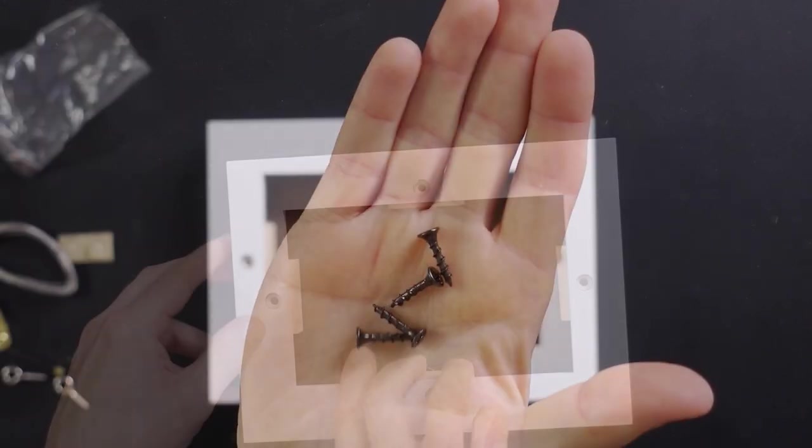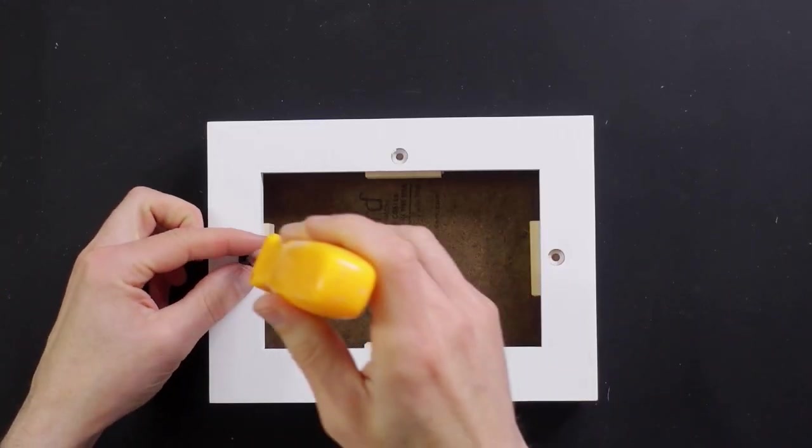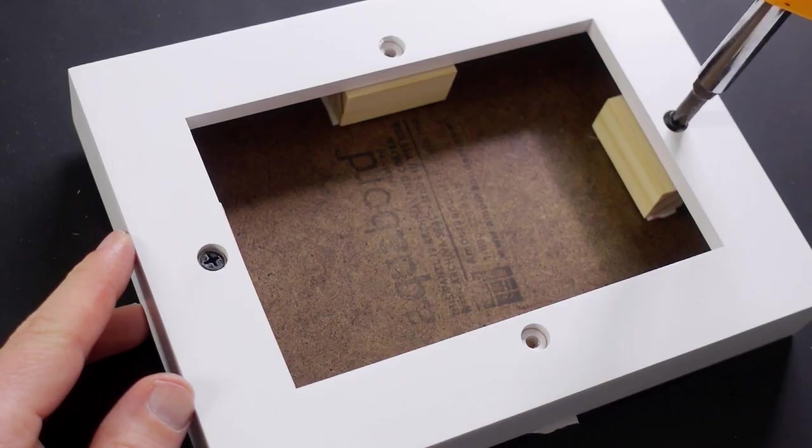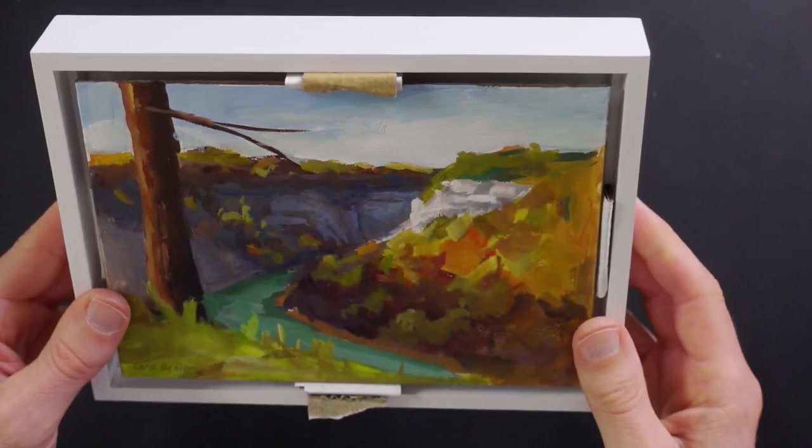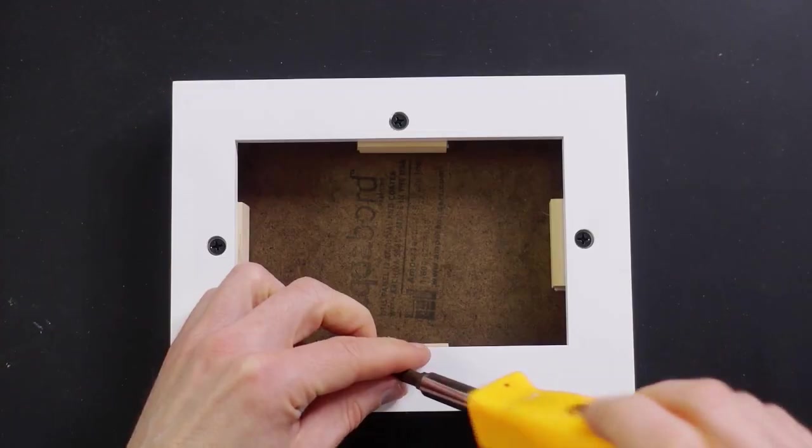Carefully turn it over. In the bag of hardware look for the four screws. You can use a drill to drive these in but you got to be careful that you don't overdo it. So I just use a regular screwdriver and I take my time. I usually flip it over and check to make sure the spacing is still correct. That looks good so I'll put the other two in.